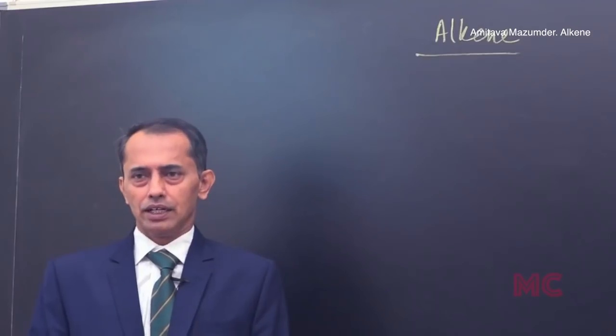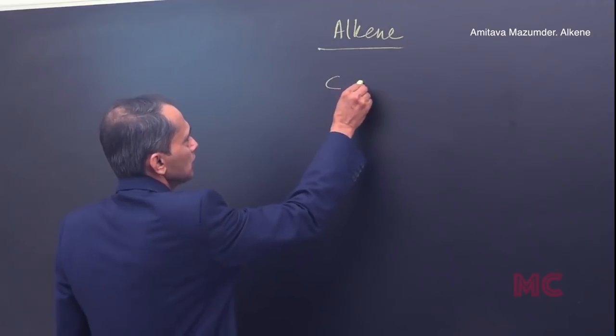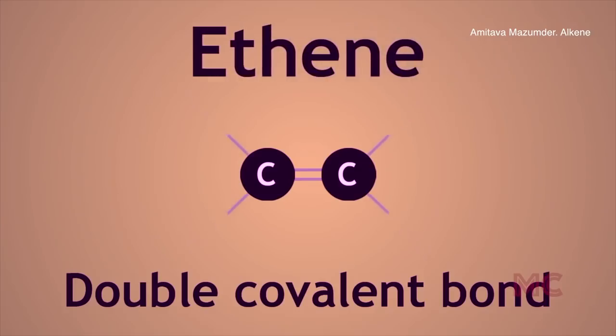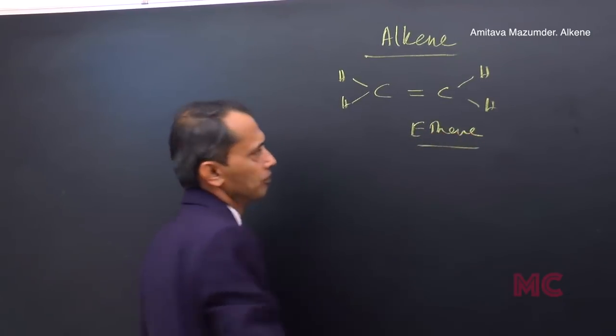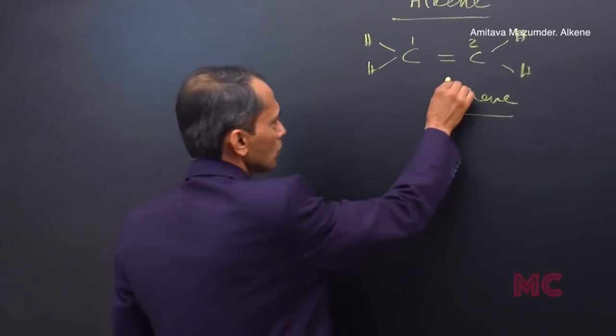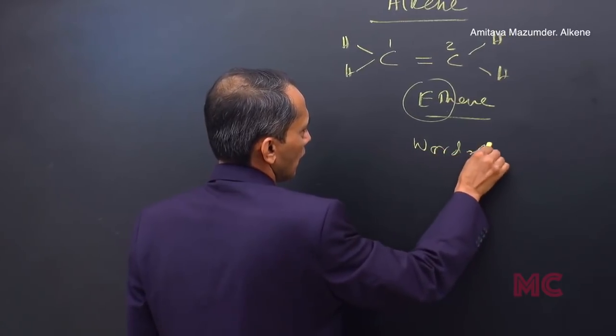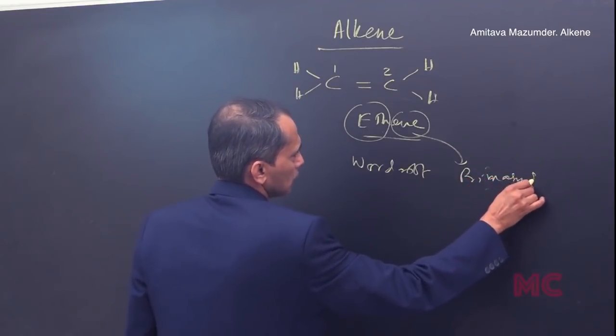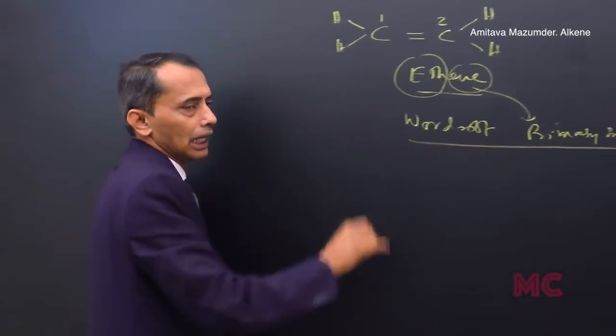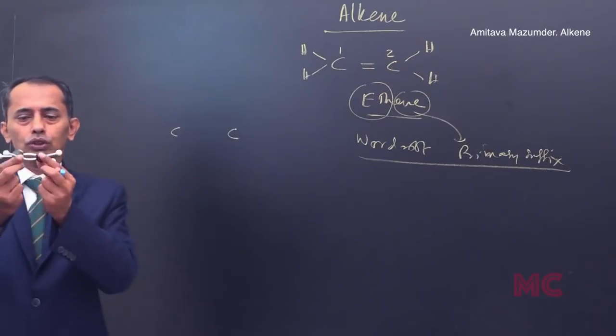Today I'll be discussing the chapter on alkenes. Alkene means there is a C=C double bond between carbon atoms — we know double bond, triple bond, single bond. If C=C is present, we call it an alkene. For example, ethene has two carbon atoms. The word root is 'eth', the primary suffix is 'ene', so it is called ethene — an alkene molecule.